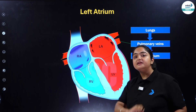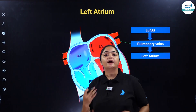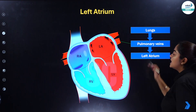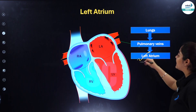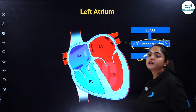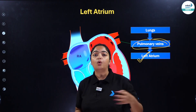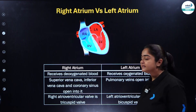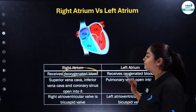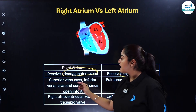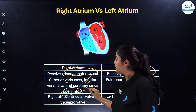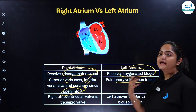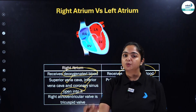From the right ventricle, the deoxygenated blood goes to the lungs where oxygenation happens — the deoxygenated blood is converted to oxygenated blood. From the lungs, the oxygenated blood first enters the left atrium with the help of pulmonary vein. Pulmonary vein is the only vein which carries oxygenated blood; all other veins carry deoxygenated blood. Right atrium receives the deoxygenated blood; left atrium receives the oxygenated blood. Pulmonary veins open into the left atrium carrying oxygenated blood from the lungs.